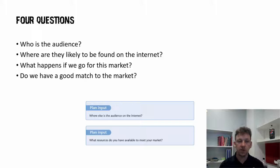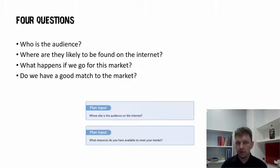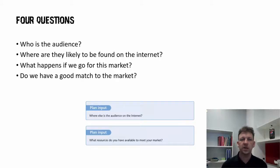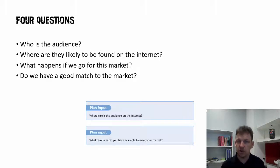Your four questions — your planned inputs — are: who's the audience, where can you find them? One of the things you want to be thinking is what happens if you go for that audience — do you have a good match? So now you start thinking about audience fit, about how well you've got the resources to address this particular market. It might be a market you deeply desire, but do you have the resources to serve it well enough so that market will be satisfied?